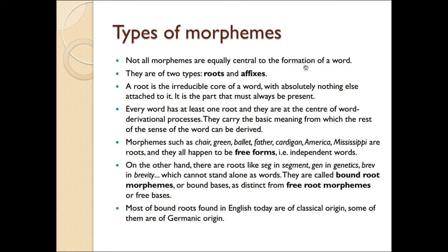Not all morphemes are equally central to the formation of words. There are two types: roots and affixes. A root is the irreducible core of a word with absolutely nothing else attached to it. It is the part that must always be present. Every word has at least one root and they are at the center of the word derivational process. They carry the basic meaning from which the rest of the sense of a word can be derived. Morphemes such as chair, green, ballad, father, etc. are roots, but they all happen to be free forms — independent words.